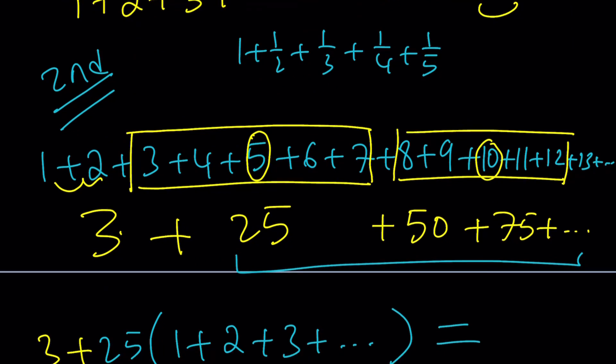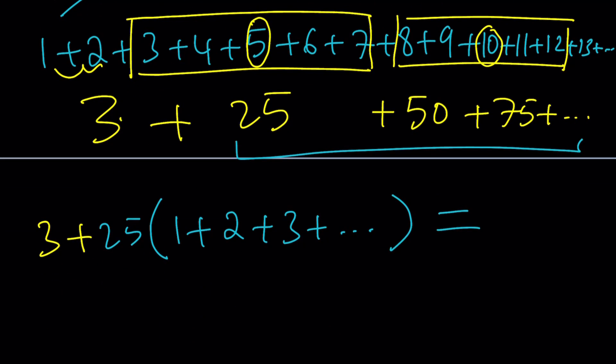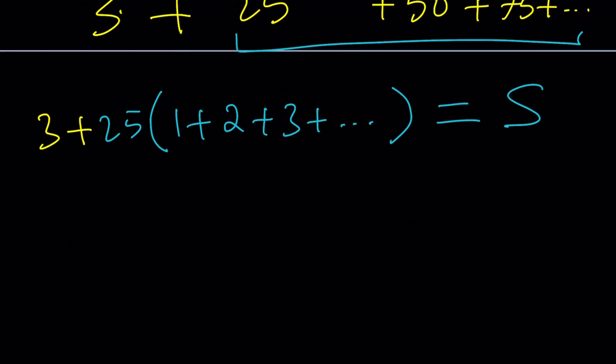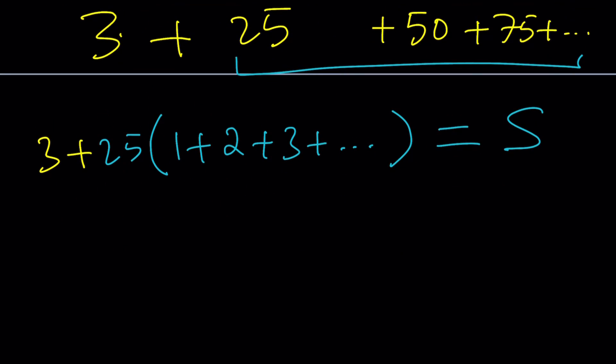By the way, I started with 1 plus 2 plus 3 plus 4 dot dot dot, which is my S, the infamous sum, right? Okay. Now, notice that I also got the same sum inside the parentheses. Uh-oh. Then I get something like this: 3 plus 25 S equals S.